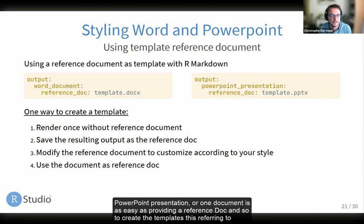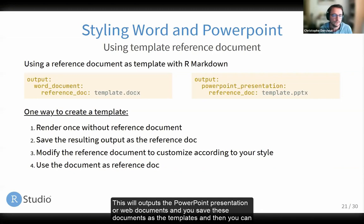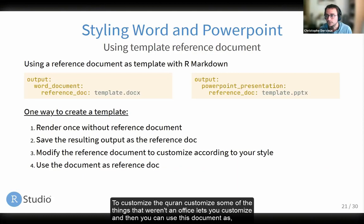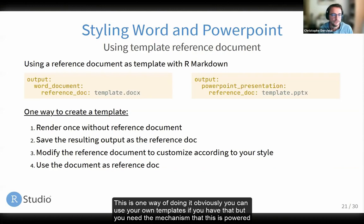It's interesting to know that you can customize Office documents when creating them with R Markdown. Customizing PowerPoint presentations or Word documents is as easy as providing a reference document. To create this template reference document, my advice is to first render the document without any reference doc. This will output a PowerPoint presentation or Word document. You save this as a template, then modify this reference document to change the style, colors, and other things that Word and Office let you customize. Then you can use this document as a reference doc.